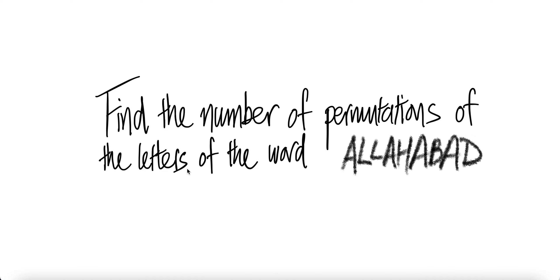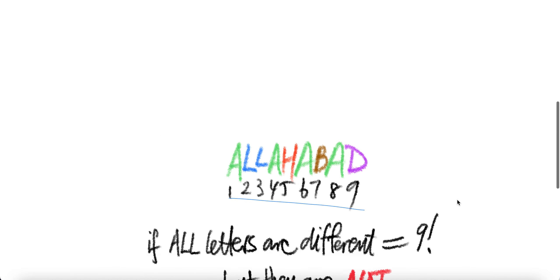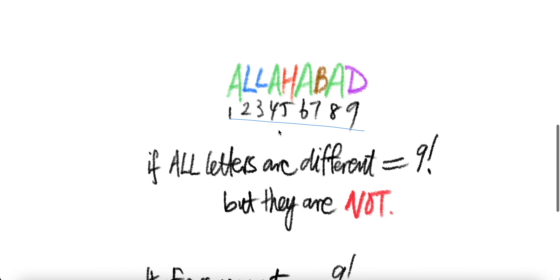Find the number of permutations of the letters of the word Allahabad. We color the letters that are the same in one color: A in green, the two L's in blue, and H in a different color.